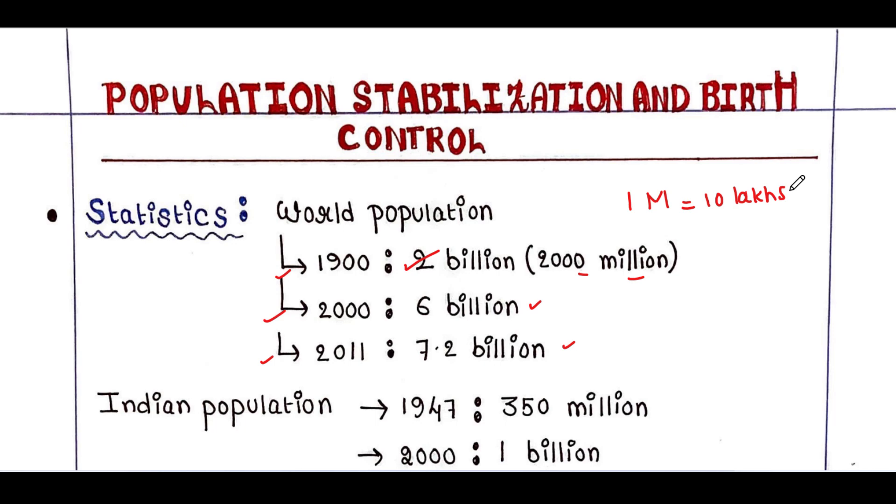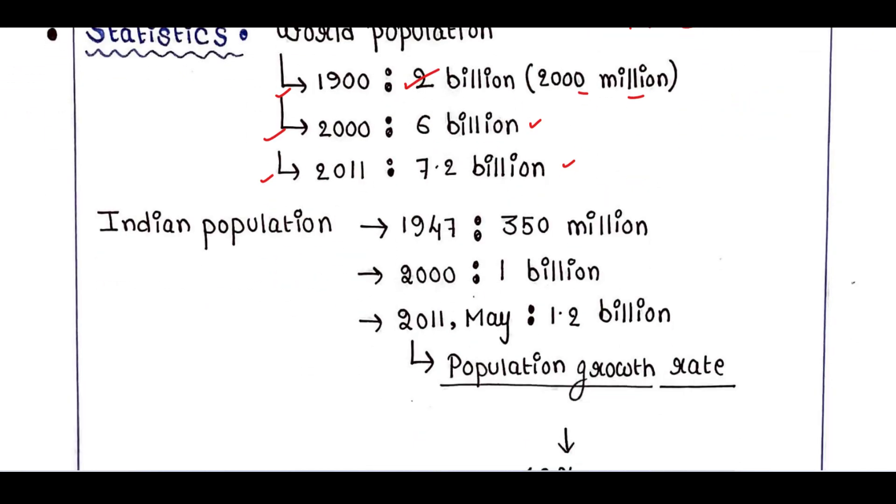Now let's find out the Indian population. It was 350 million in 1947, 1 billion in 2000, 1.2 billion in 2011 May. So that means the world population as well as Indian population is getting increased day by day.